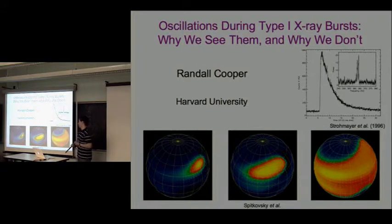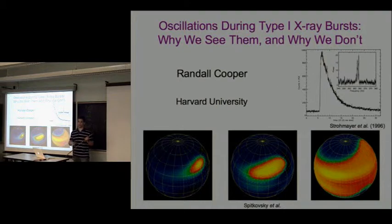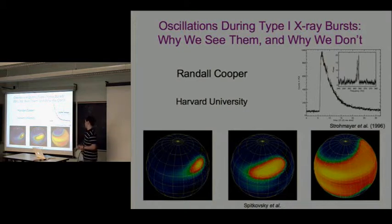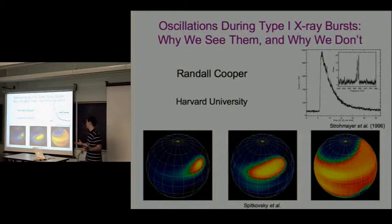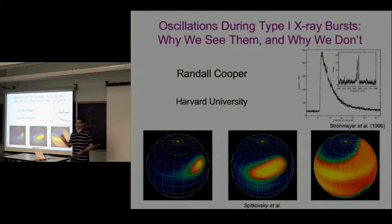Let me give you a little overview before I start. This is a light curve of what a typical Type 1 X-ray burst looks like - X-ray counts as a function of time. It's characterized by a very fast rise, like a second or so, with an exponential-like tail. The Fourier transform of the light curve in the burst tail shows a lot of power at about 363 hertz, illustrating oscillations in the light curve.